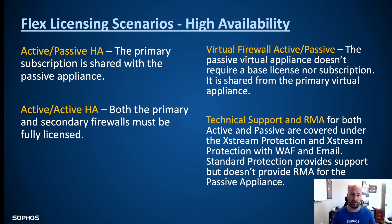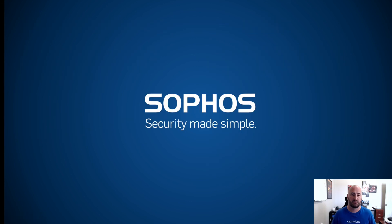Regarding support and RMA for hardware: in a normal environment, as long as a device is licensed, it will have support and RMA. For HA setups, you must have at least Extreme Protection or Extreme Protection with WAF and Email on the device in order to have the passive unit covered under RMA. You will have Sophos support, but unless you have Extreme licensing, the passive unit will not be covered under the RMA process. If running active/passive with the Standard license, you still have support but no RMA for the secondary appliance. Ensure you have Extreme Protection at minimum if running an active/passive setup. This was a quick walkthrough of license usage for Sophos Central — if you have any questions, please reach out to your local MSP team.